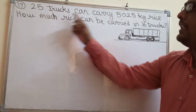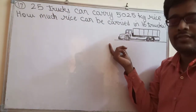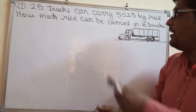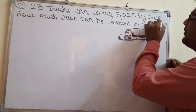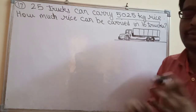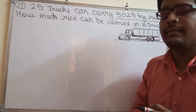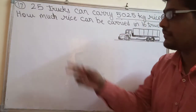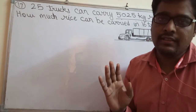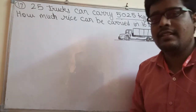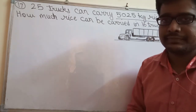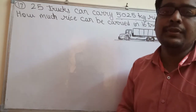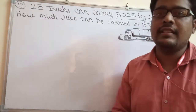What is given in this question? 25 trucks — those 25 trucks can carry, means they can take from one place to another, five thousand twenty-five kg of rice. That means all 25 trucks together can carry a total of 5025 kg of rice. If there are 16 trucks, how many kilograms of rice can they carry? The method we will use is called the Unitary Method. We will solve it using this method.